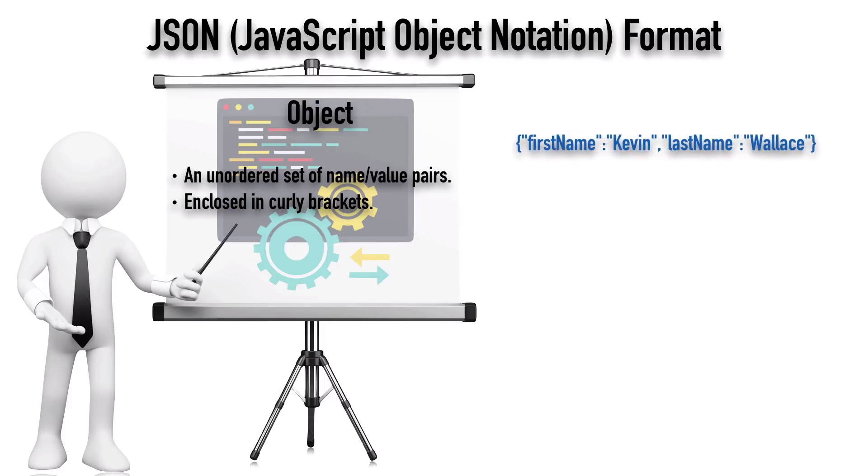As an example, let's consider my first and last name. I've got a name of firstName and the value Kevin. I've got another name, lastName, and the value Wallace. Notice that everything is enclosed in quotes, and the name and value are separated by a colon. This is valid JSON format.